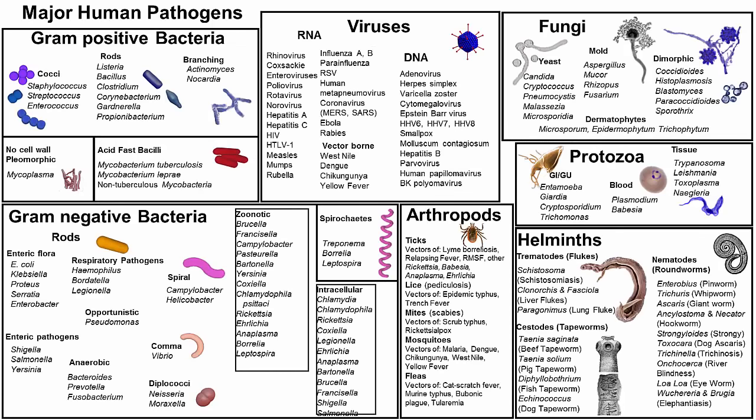Here is our pathogen map with a whole host of my favorite organisms. For genital ulcer disease, these are the pathogens we will look at: herpes simplex virus, Treponema pallidum, and Haemophilus ducreyi. Minor contributors are Chlamydia trachomatis, which causes lymphogranuloma venereum, and Klebsiella granulomatis.